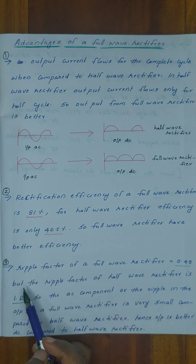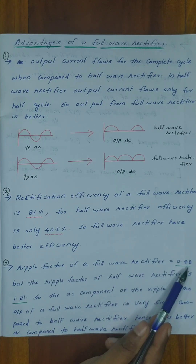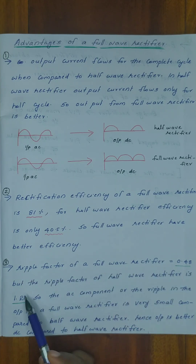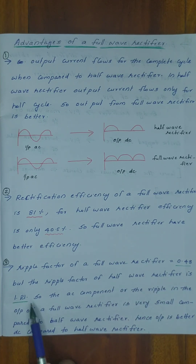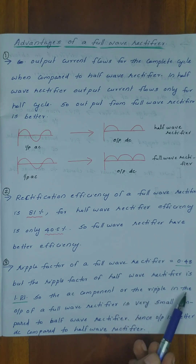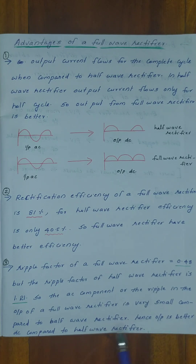The third advantage: the ripple factor of a full wave rectifier is 0.48, but the ripple factor of a half wave rectifier is 1.21. So the AC component, or the ripple, in the output of a full wave rectifier is very small compared to a half wave rectifier.